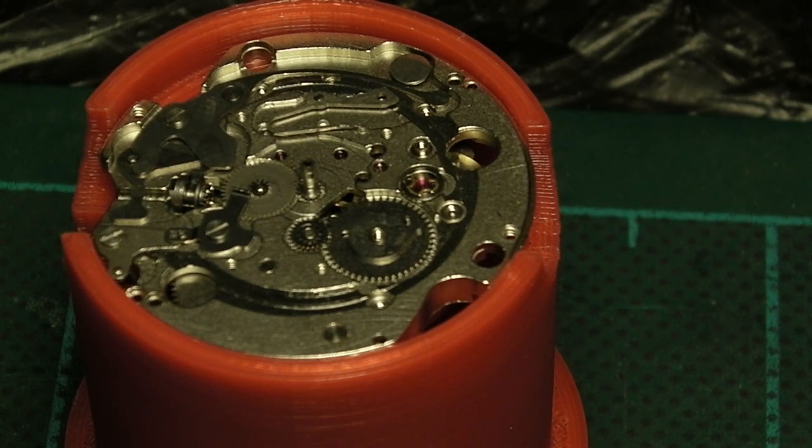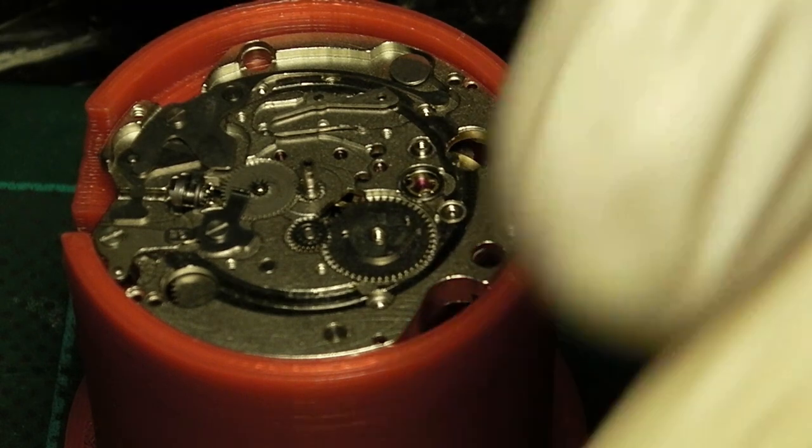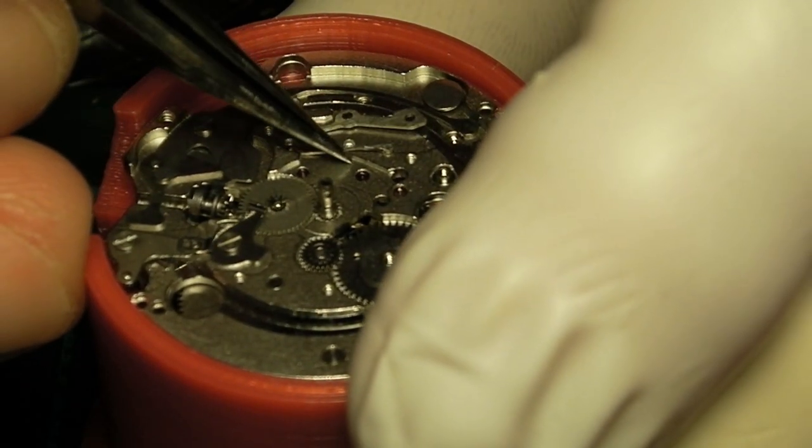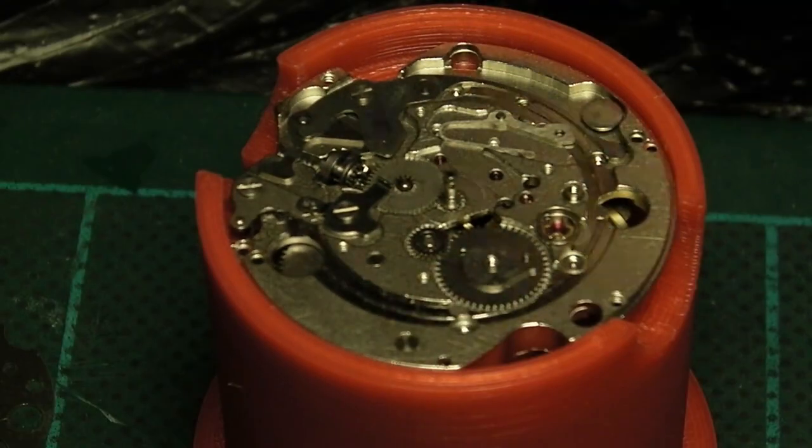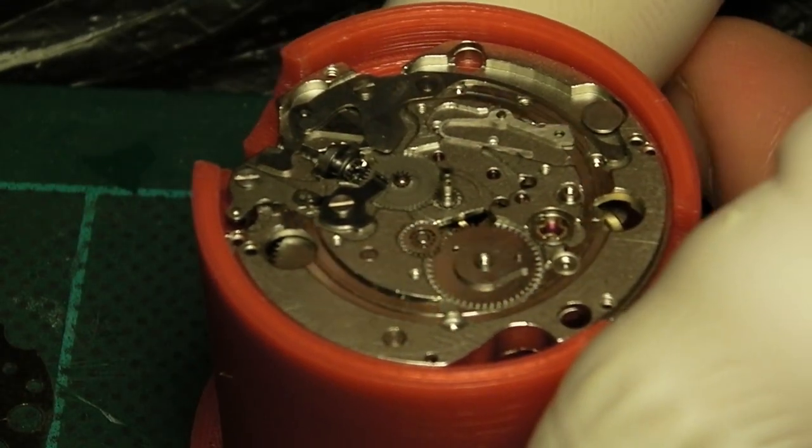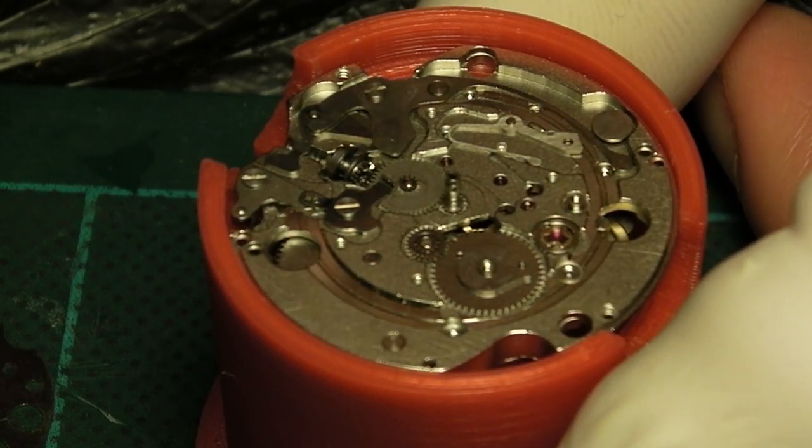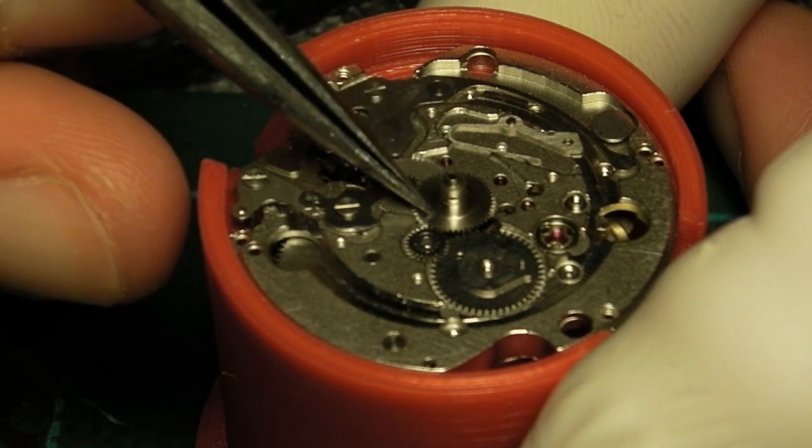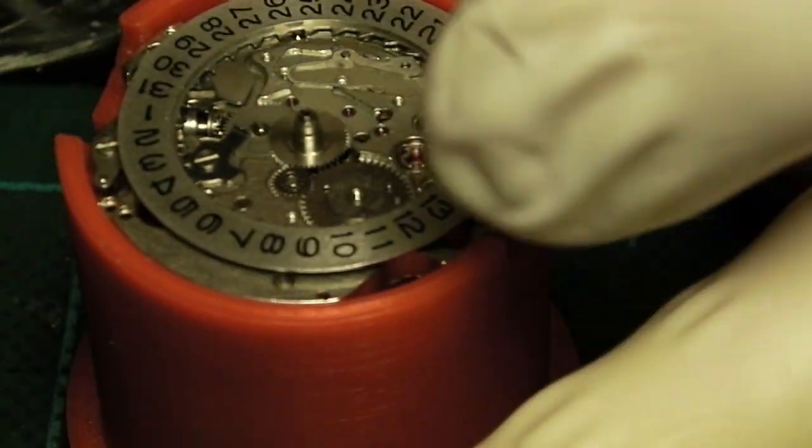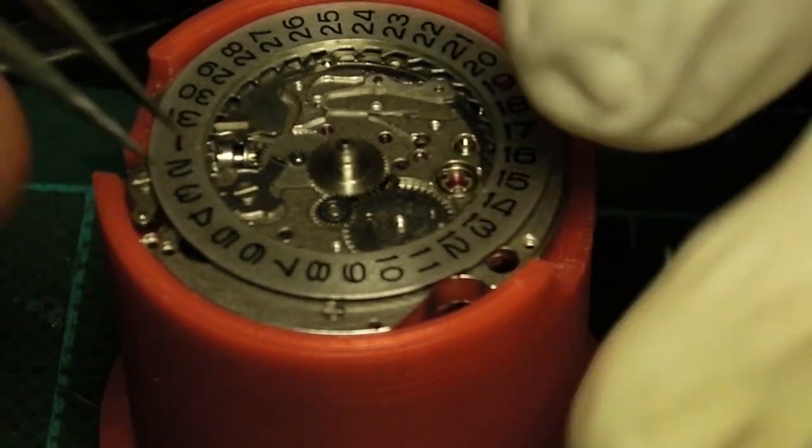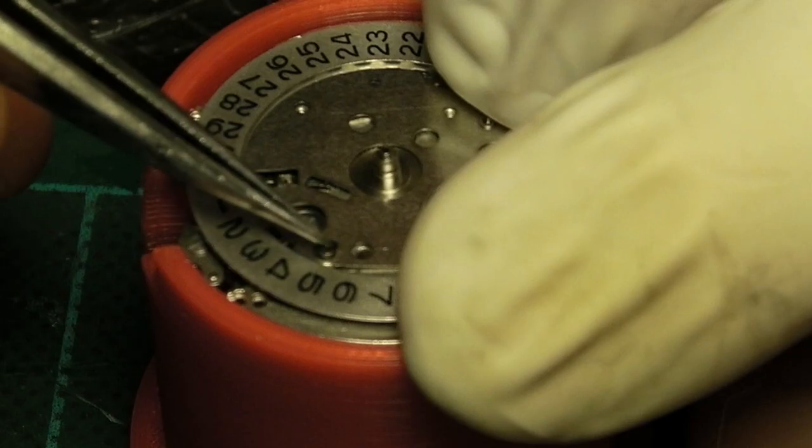It's very easy with grease to get that in places where you don't want it, so keep a bit of pegwood and rodico handy for cleaning up. Here I'm fitting the hour wheel, then the date ring, which is placed into position and holds the date wheel jumper spring slightly under tension. That's held in position while the cover plate is placed and the two securing screws are fitted to make sure it doesn't jump out.